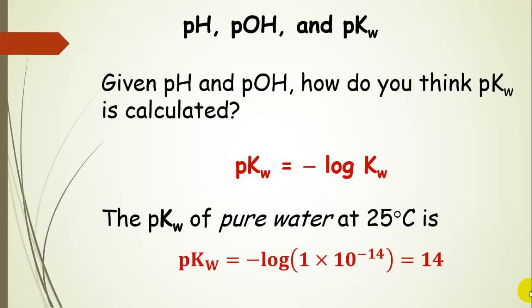How is pKW calculated? There's a pattern here: we just take the negative log of KW. The pKW of pure water at 25 degrees C — since KW is 1 times 10 to the negative 14 at 25 degrees C — is 14.